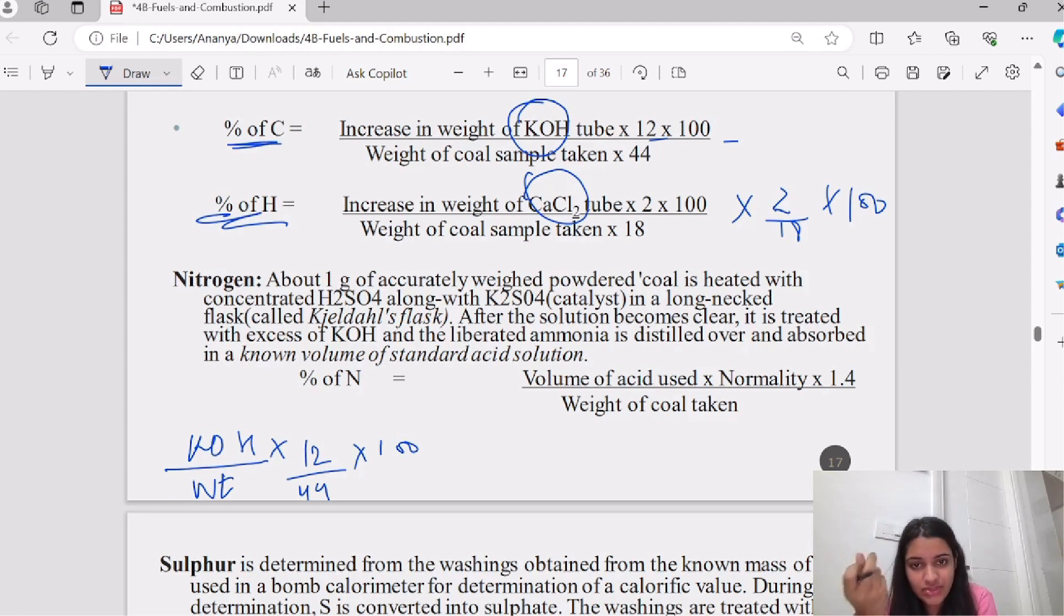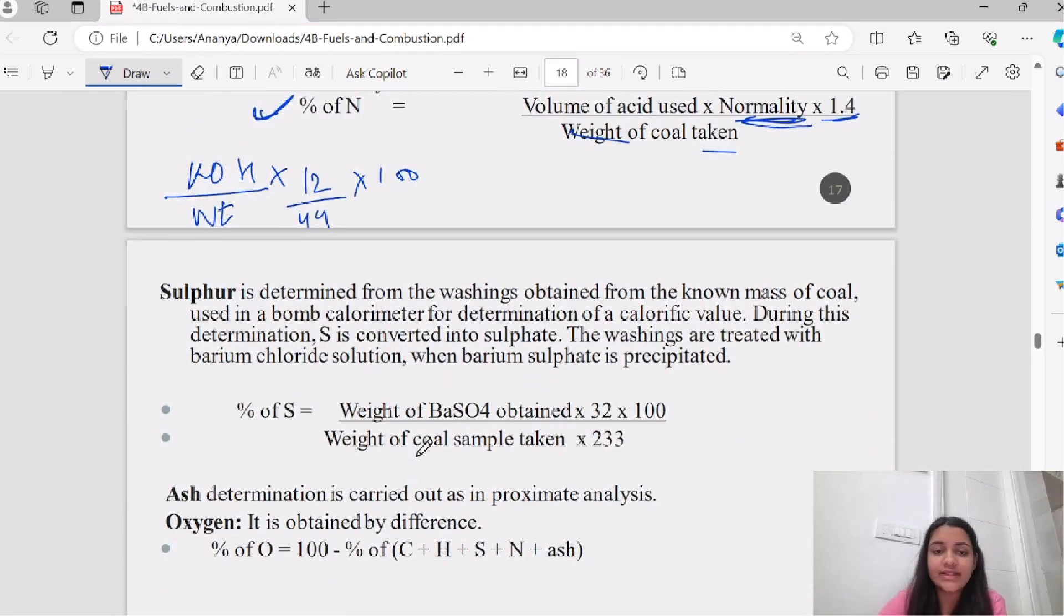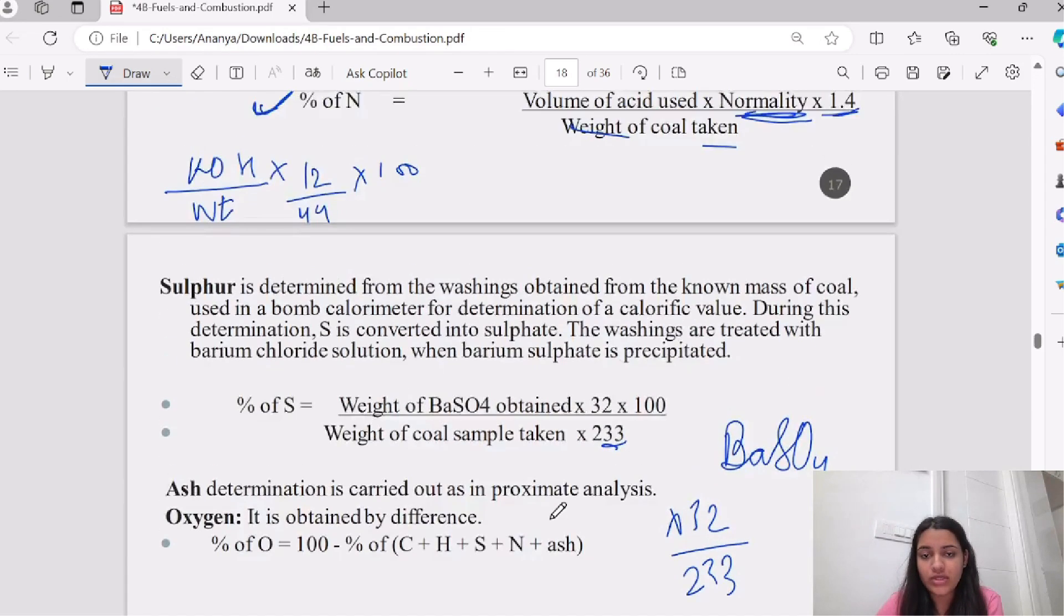For nitrogen, we use Kjeldahl's flask. We treat it with potassium hydroxide and the liberated ammonia. Volume of acid used, K2SO4 into normality into 1.4 by weight of coal taken gives percentage of nitrogen. For sulfur, we treat it with BaSO4: 32 upon 233 into weight of coal taken multiplied by 100. Ash is calculated in proximate analysis.